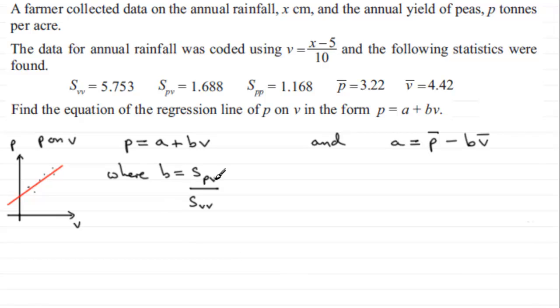So when it comes across here then to carry on with b, we've got that b equals spv, which is 1.688, and then that's going to be divided by svv. Svv is 5.753, and if we do that division, we end up with that equaling 0.2934 and so on.